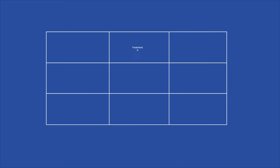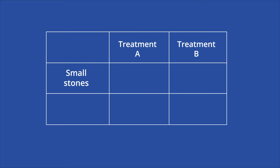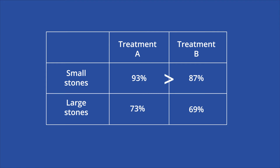Simpson's paradox occurs most often in social science and medical research featuring two variables with two conditions each. To illustrate, take a 1986 study published in the British Medical Journal investigating two types of kidney stone treatments. Both treatments could be used on both small and large kidney stones. Treatment A was successful for 93% of its small stone patients and 73% of its large stone patients. Treatment B, on the other hand, was successful for 87% of its small stone group and 69% of its large stone group. At first glance, it appears as though treatment A has the higher success rates across the two stone sizes.